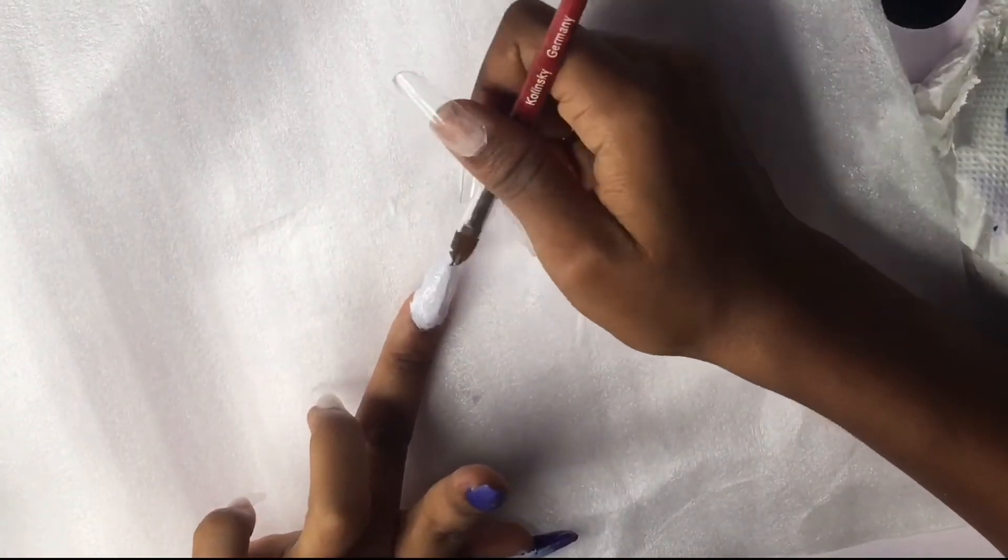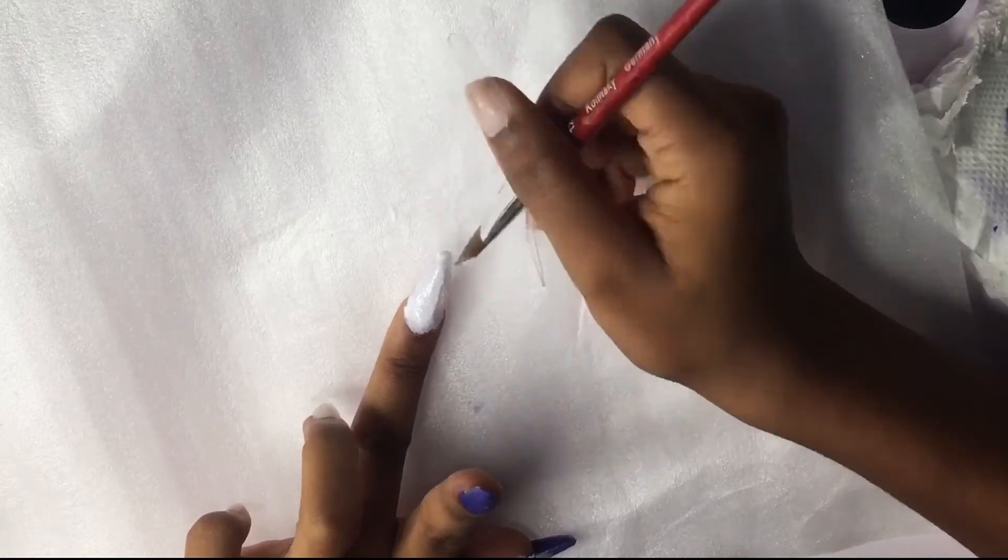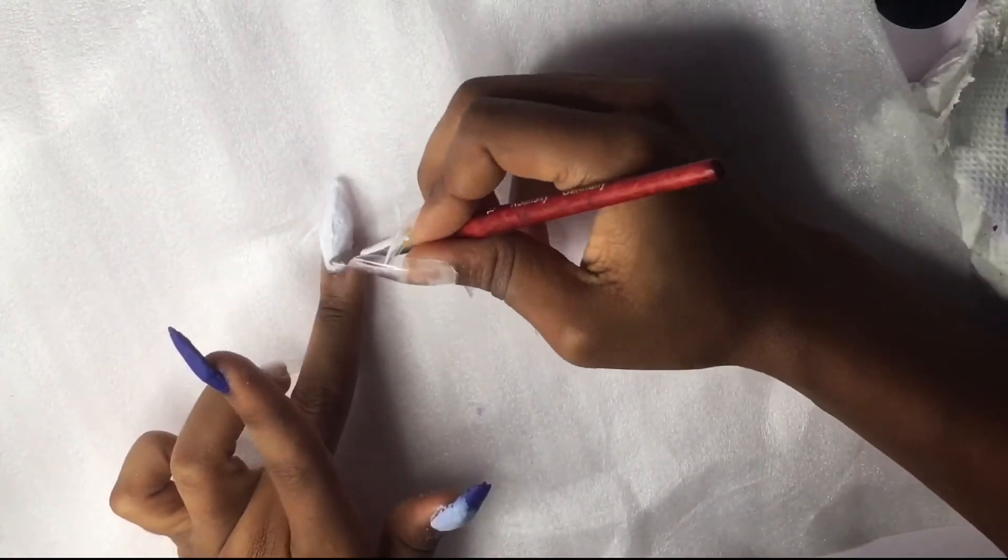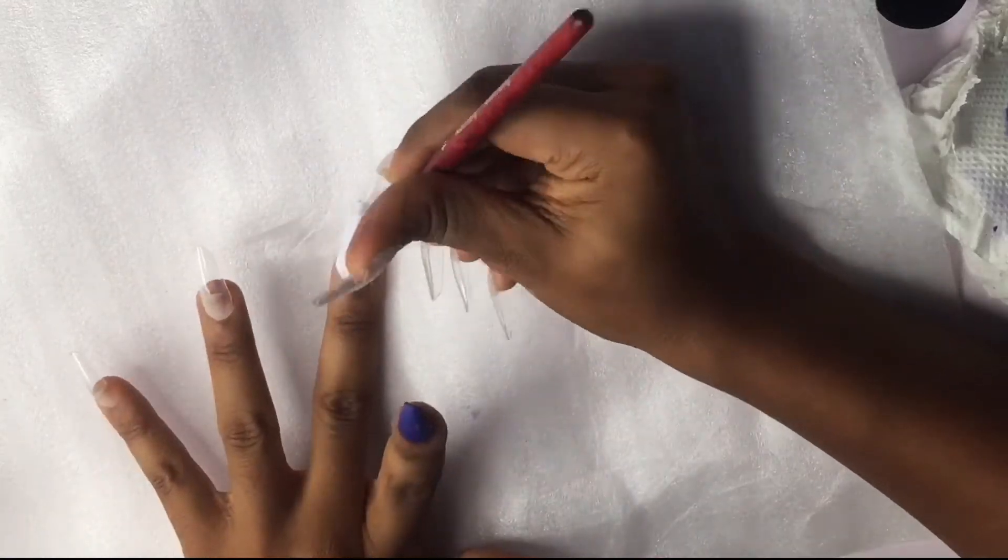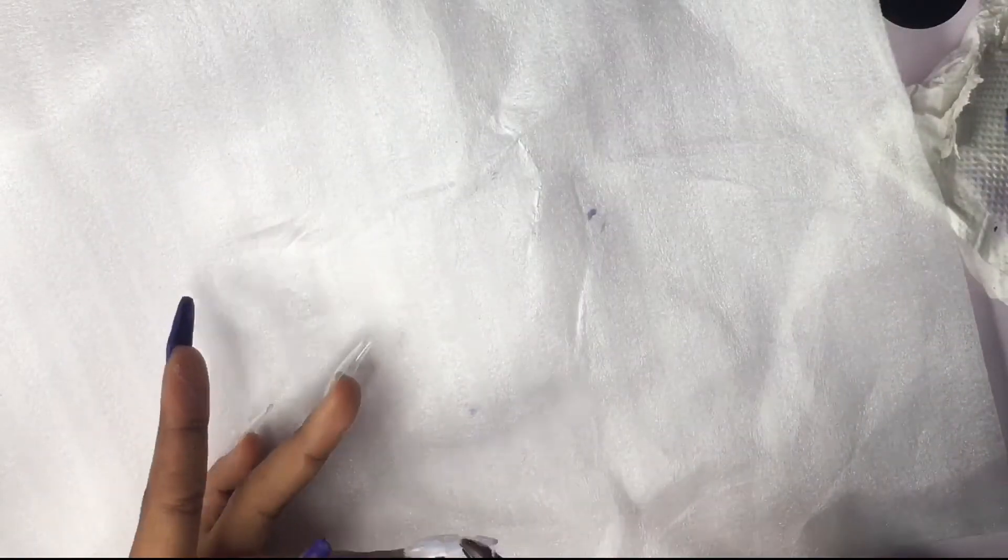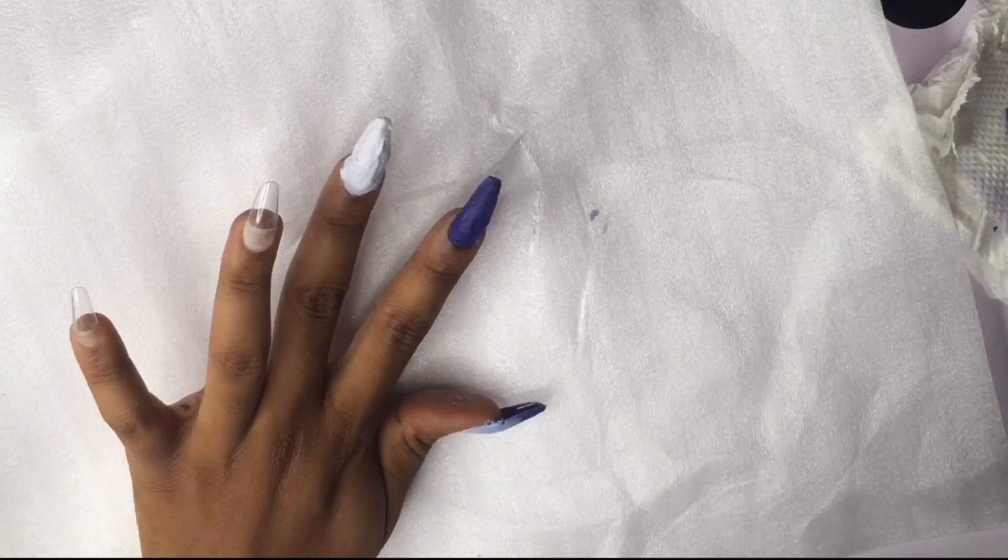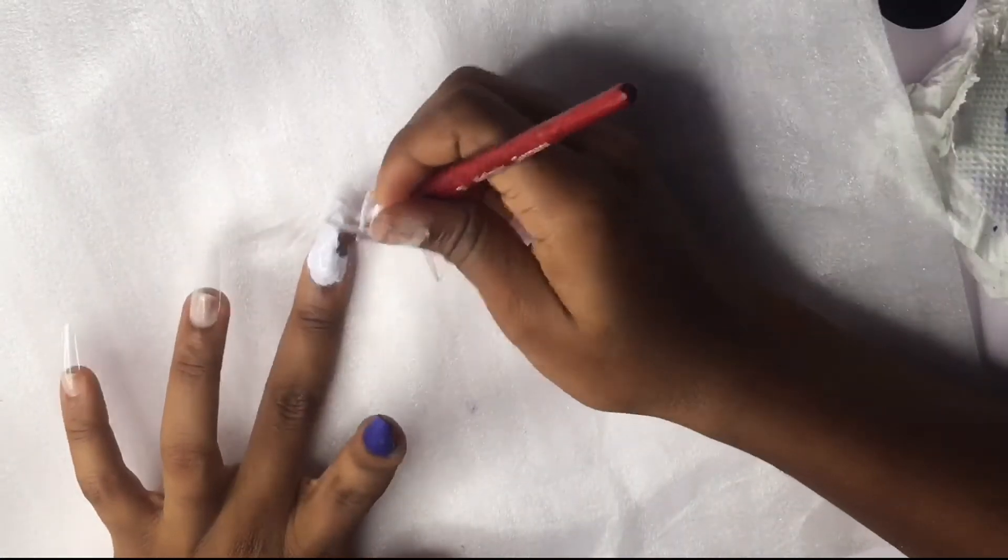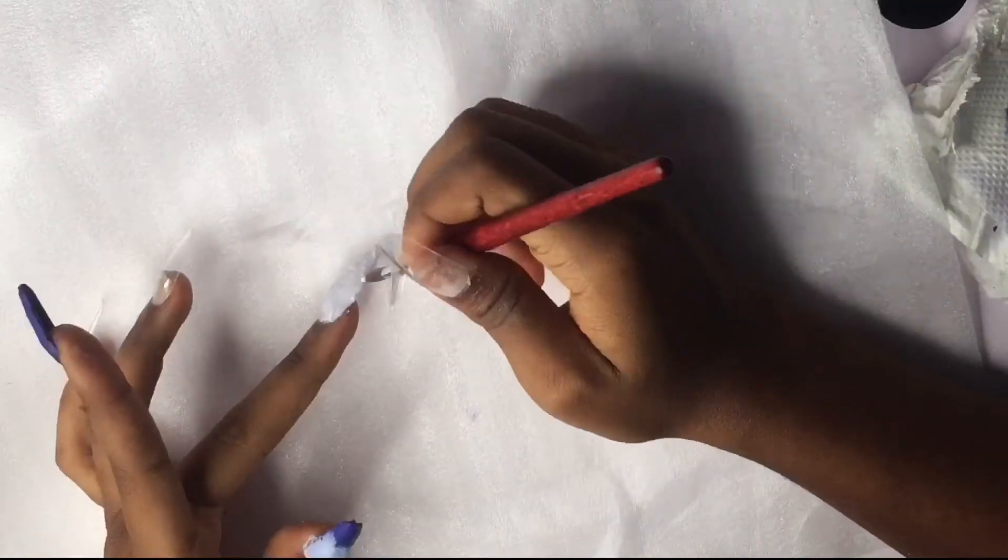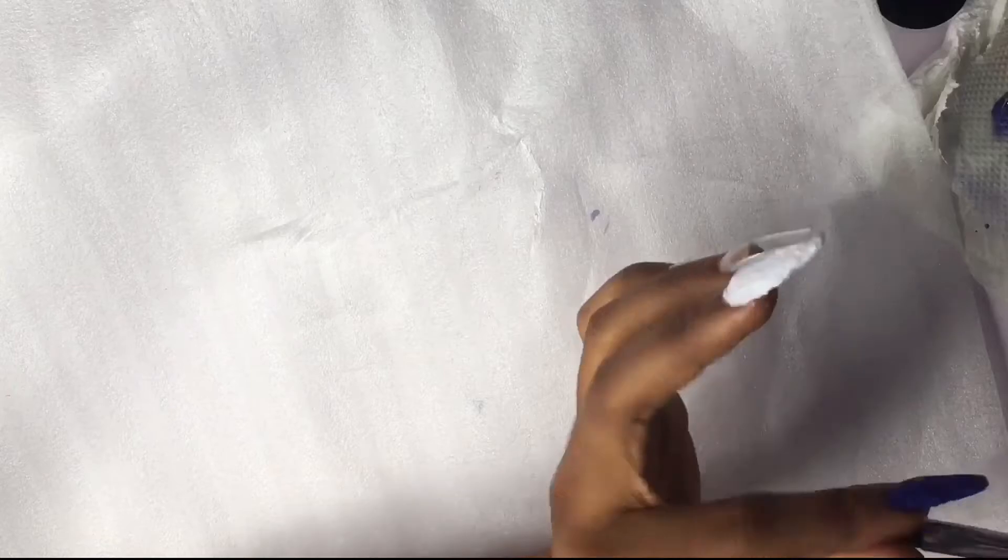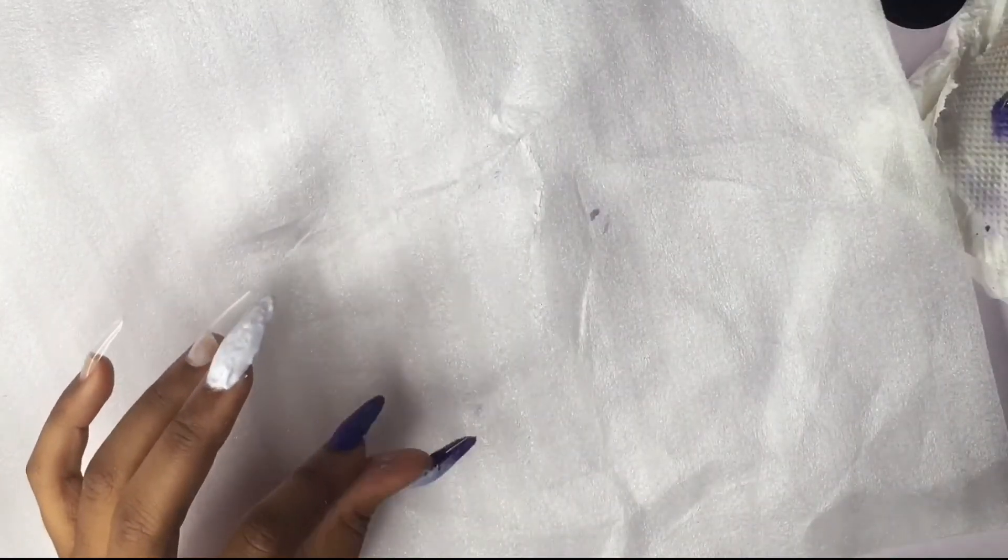Another tip as well is for you to practice your beads. When you're using the acrylic powder, when you dip your brush in the monomer and dip it in the powder, that round thing that it forms is called the bead. So you want to practice that and also how to get this bead evenly distributed on the nail.